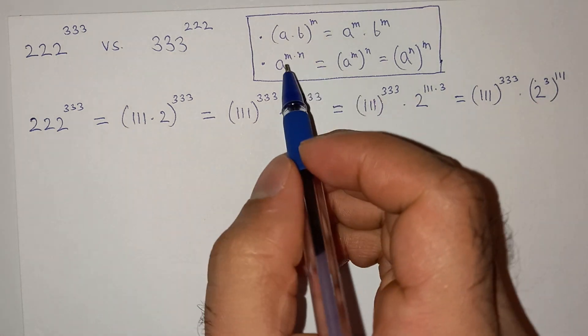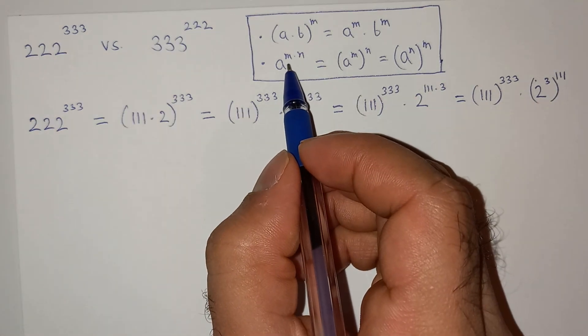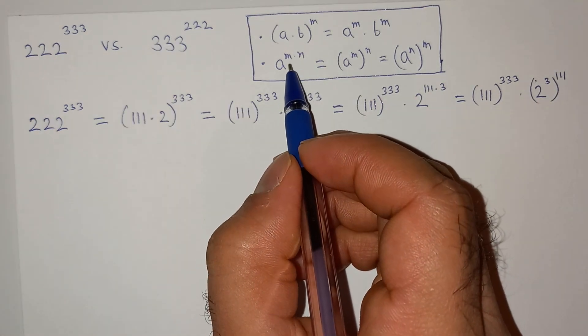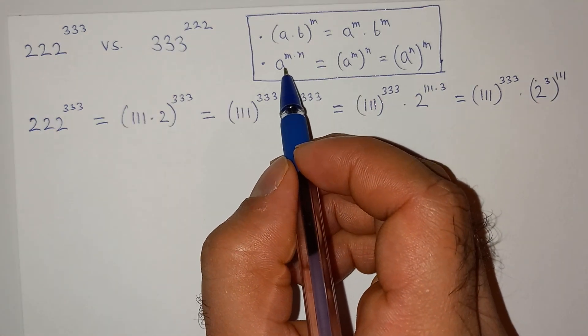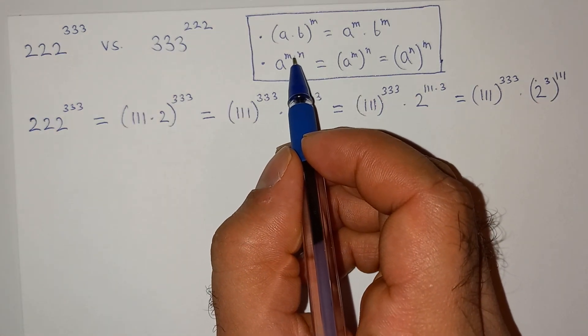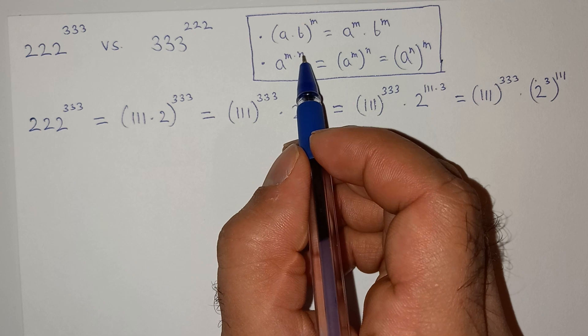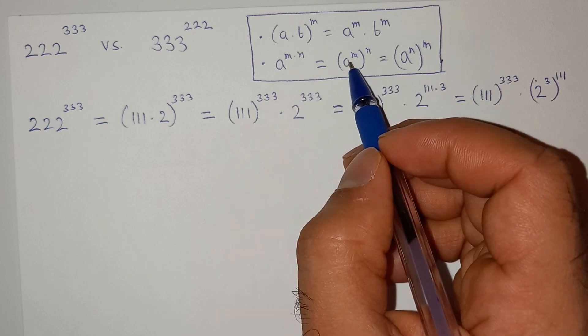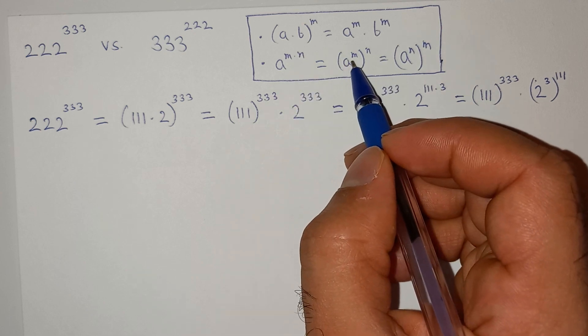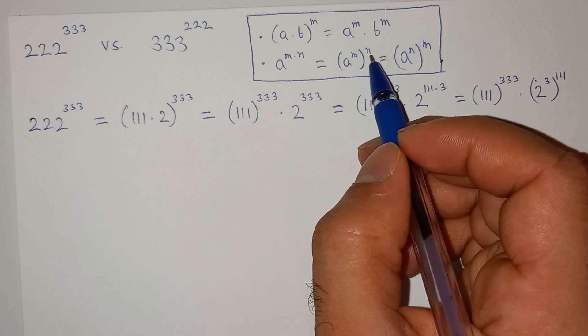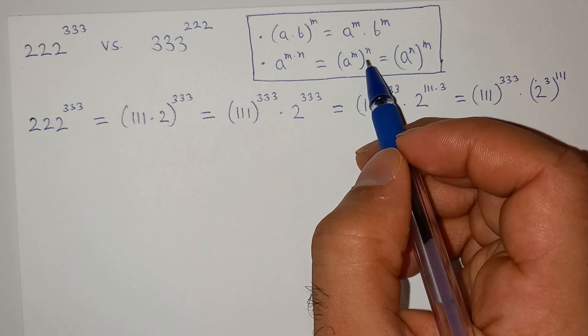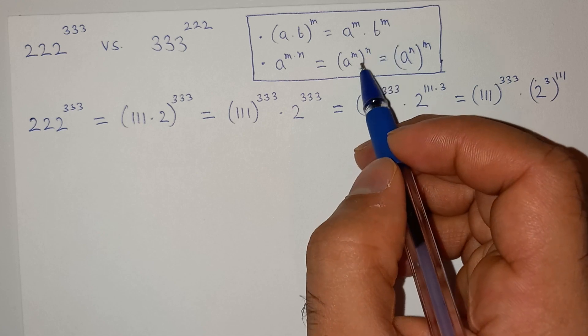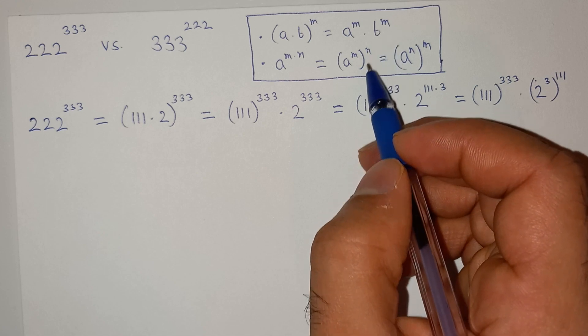So I have used this exponential rule: a power m multiplied power n equals to bracket a power m bracket closed power n.